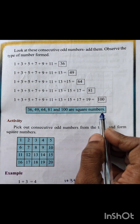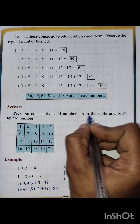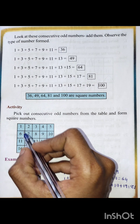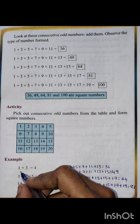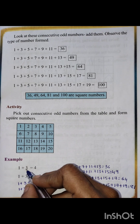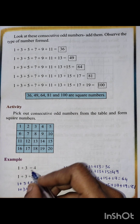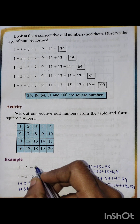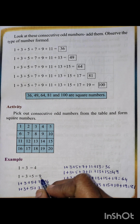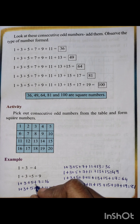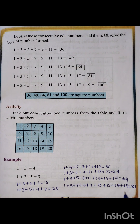Now let's see one activity: pick out consecutive odd numbers from the table and form square numbers. In this table, the example shows one plus three is equal to four — adding two continuous odd numbers gives a square number. Same way, one plus three plus five is nine; one plus three plus five plus seven is sixteen. In the same way, up to eighty-one they can form square numbers.